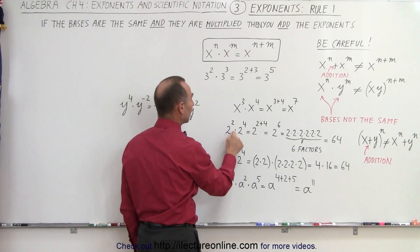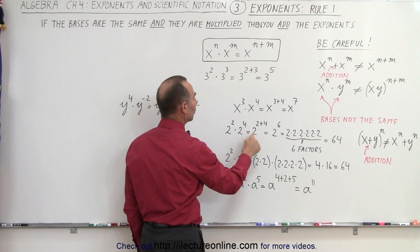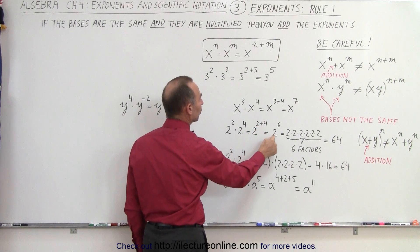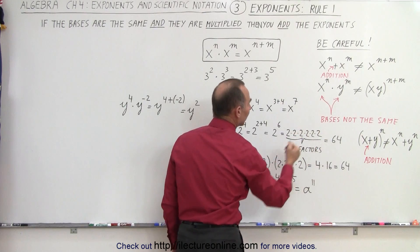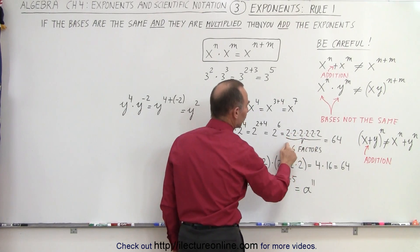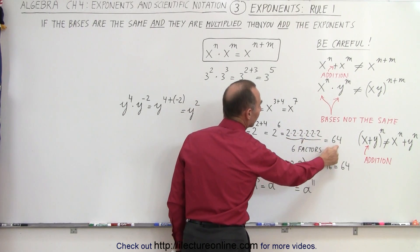Here we have two to the second power times two to the fourth power, which is two to the two plus four, which is two to the sixth power. Basically, two multiplied by itself six times. There are six factors of two. When you multiply them together, you get 64.